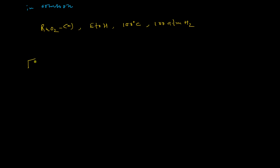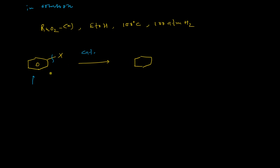One more interesting point: if there is a carbon–halogen bond in the benzene ring and you want to selectively hydrogenate the benzene ring while preserving the carbon–halogen bond, in all catalytic systems you will find that hydrogenolysis of the carbon–halogen bond always takes place regardless of which catalyst you choose.